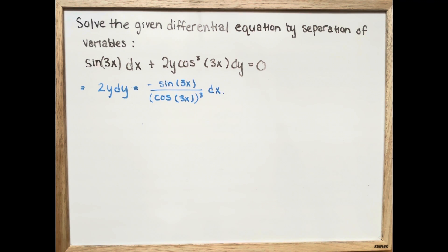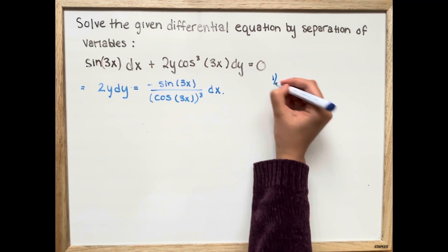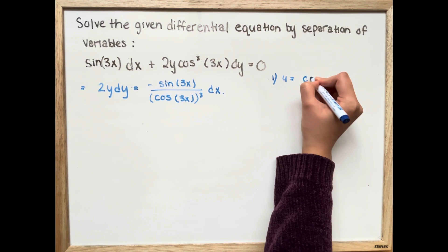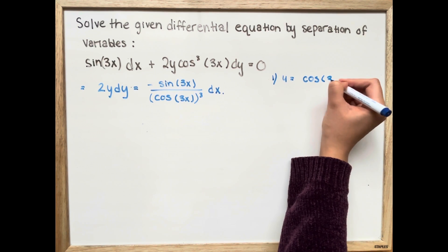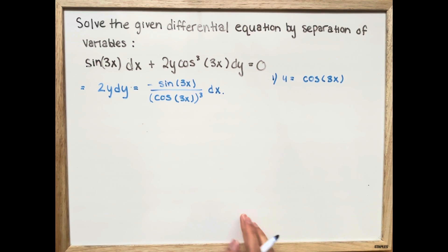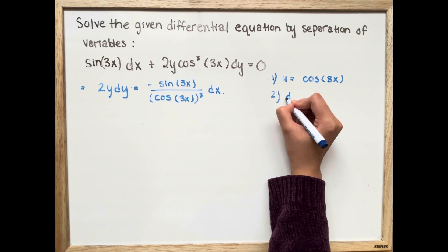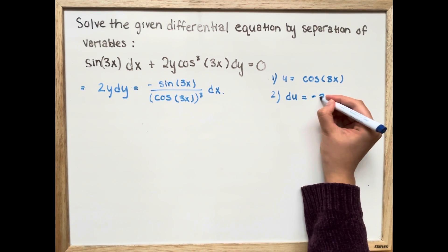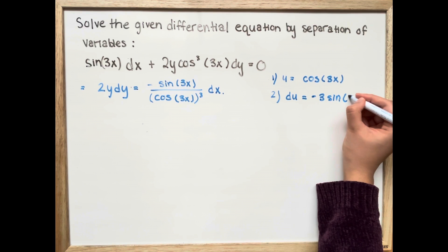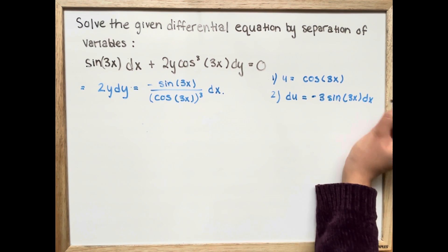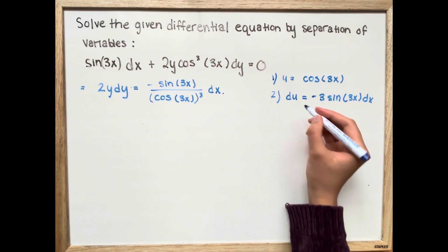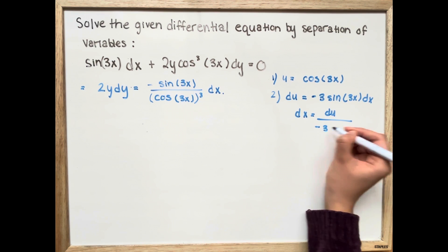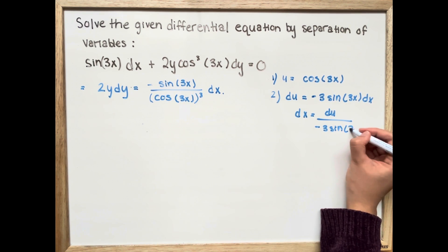The next step is setting u equal to cosine 3x. We take the derivative of u, which gives us negative 3 sine 3x dx. Writing it in terms of dx, we get dx is equal to du over negative 3 sine 3x.